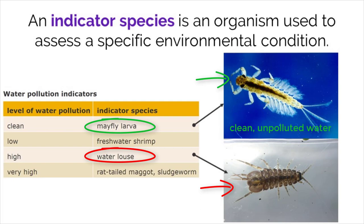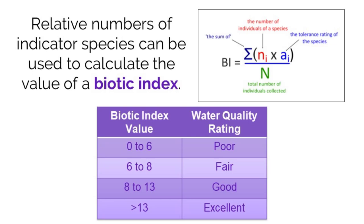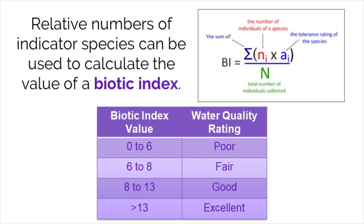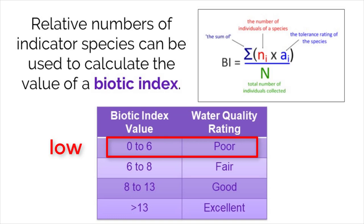The distribution of indicator species in an environment can be used to calculate a number called the Biotic Index. This number is used to inform ecologists of how polluted the area is. A low biotic index indicates that the environment is poor and full of pollutants, whereas a high biotic index indicates that the water quality is excellent, or there is no pollution.